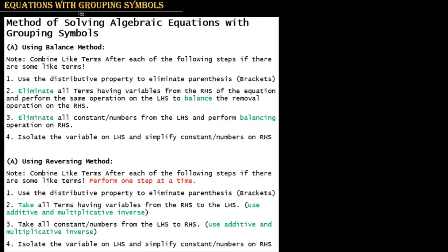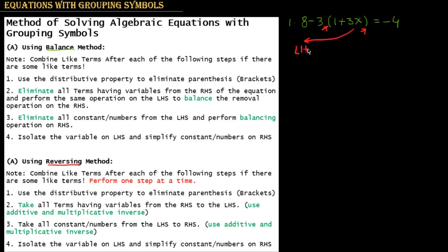In this lesson we will be solving algebraic equations with grouping symbols. For example: 8 minus 3(1 plus 3X) equals minus 4. You can solve this equation either by using the balance method or by using the reversing method. There are four essential steps for either method. The first step is to open the brackets, then take all terms having the variable to the left hand side and all numbers to the right hand side.